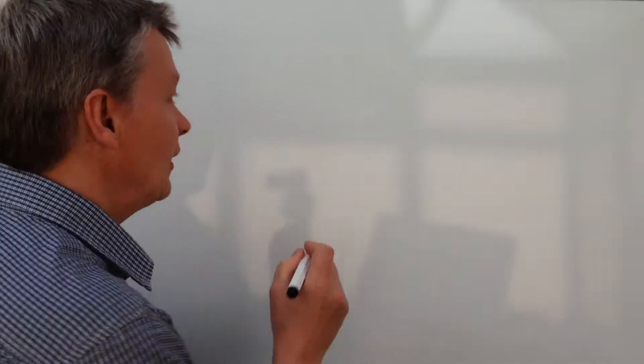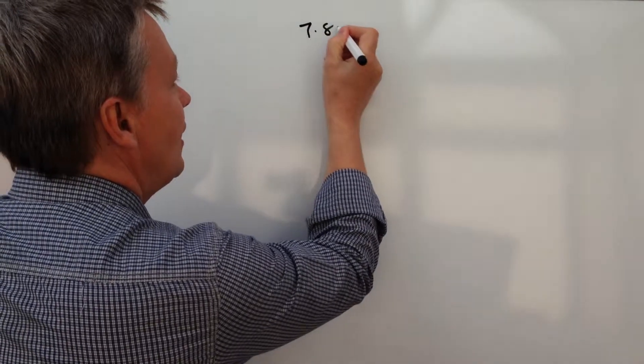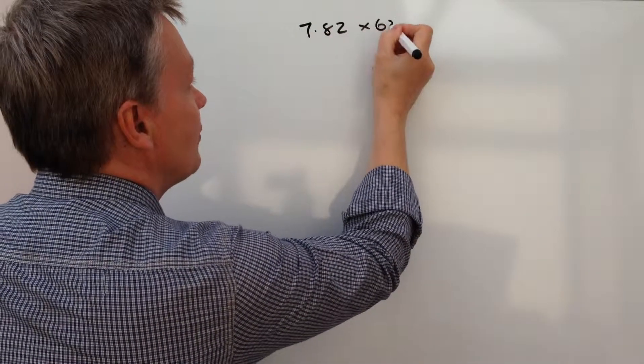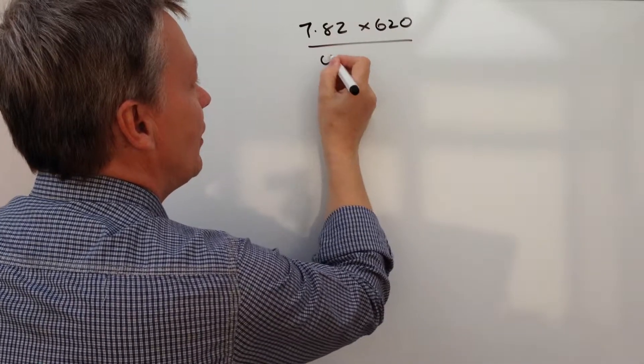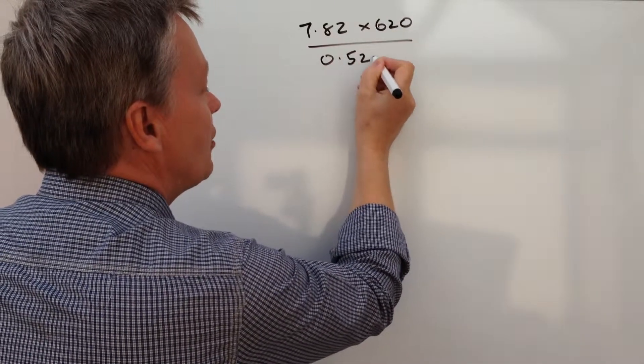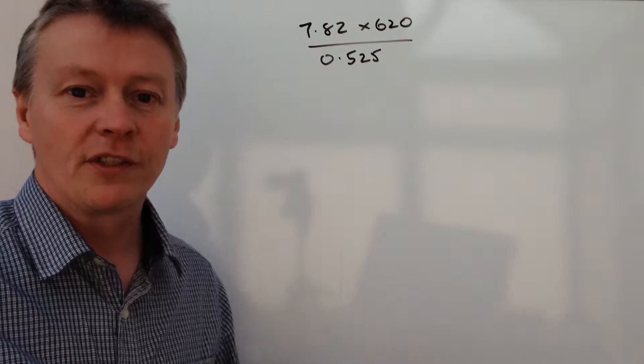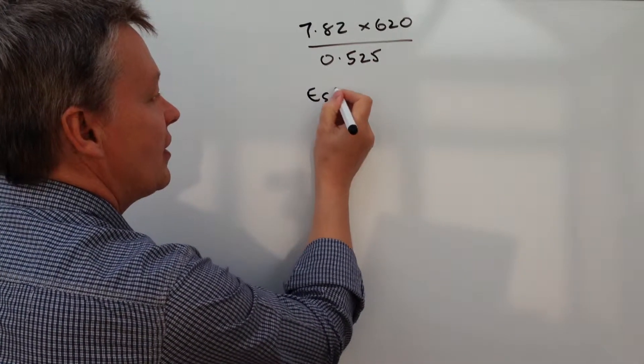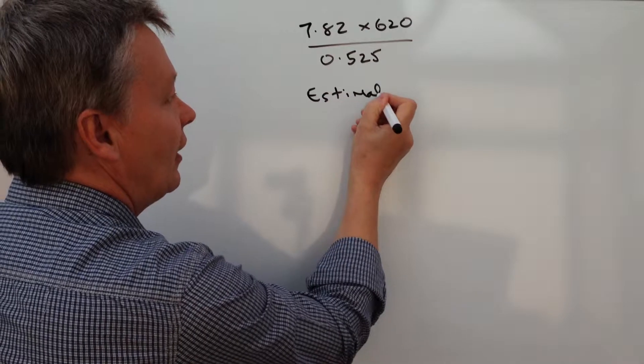It will typically say something like 7.82 multiply by 620 divided by 0.525, and what they want you to do is work out an estimate for this type of calculation.